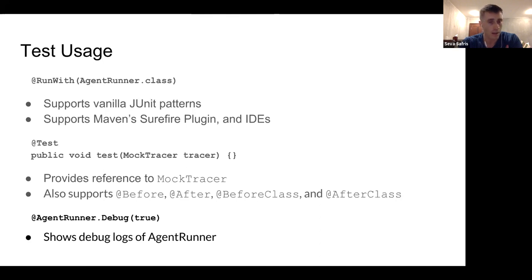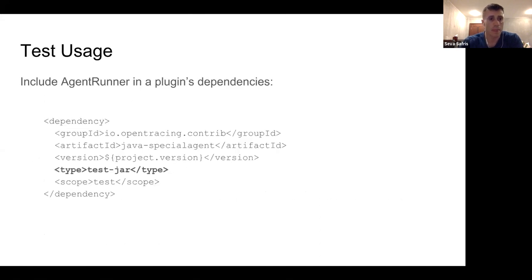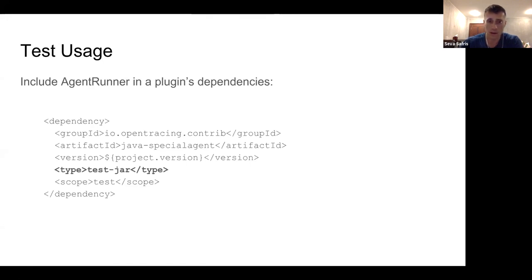This pattern — the Agent Runner — effectively supports full JUnit vanilla patterns and runs in both the Surefire plugin as well as IDEs. To include the Agent Runner in your dependencies, it's basically the same dependency artifact descriptor you'd use for a regular Special Agent, but you add the test jar as the type. And you're done.